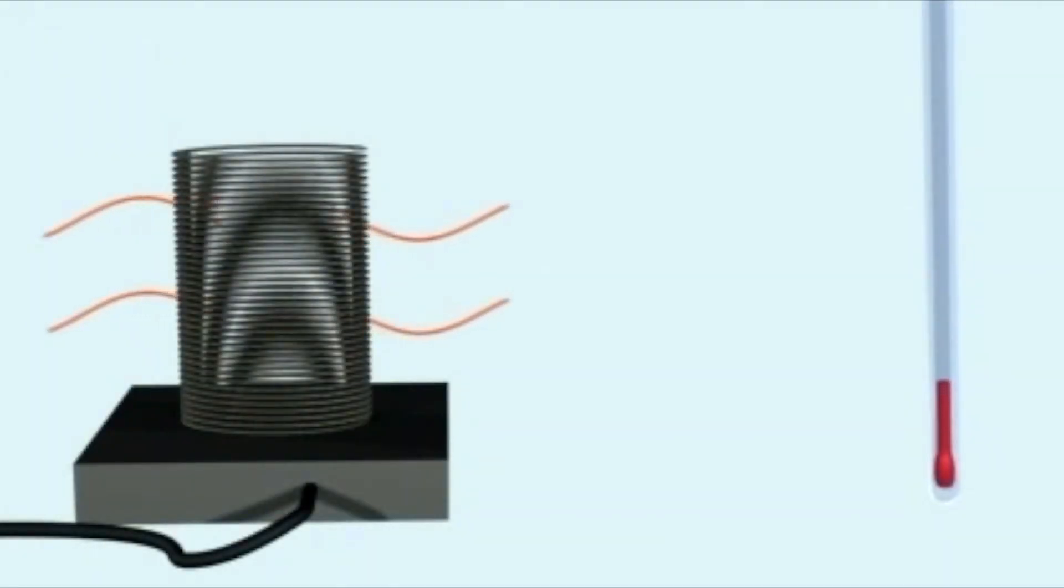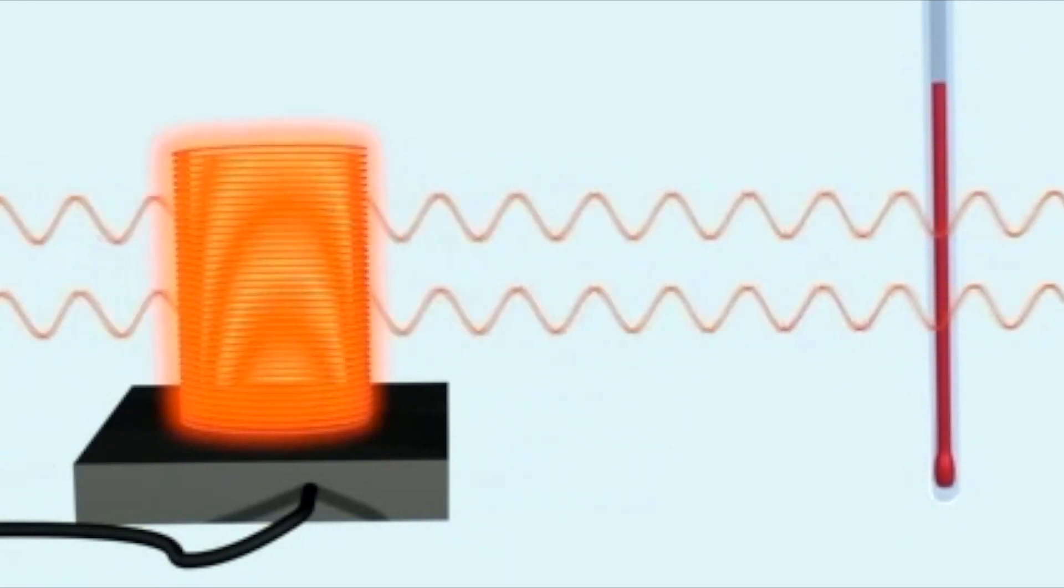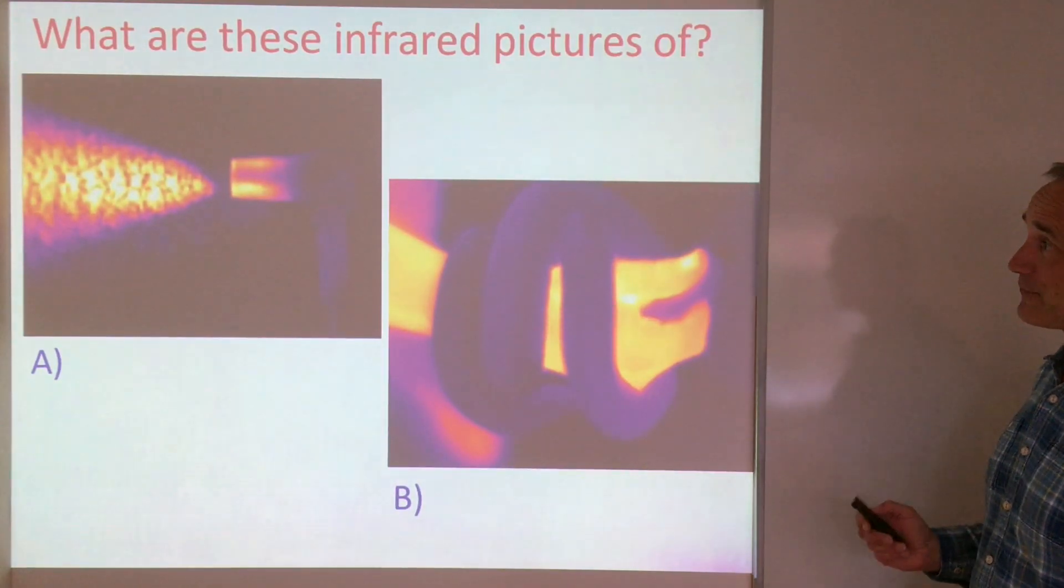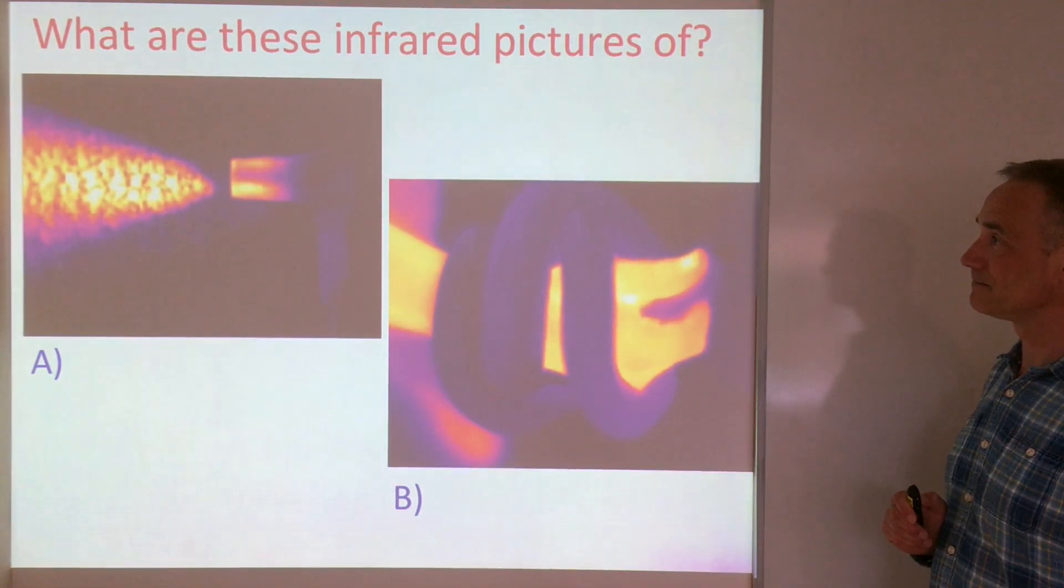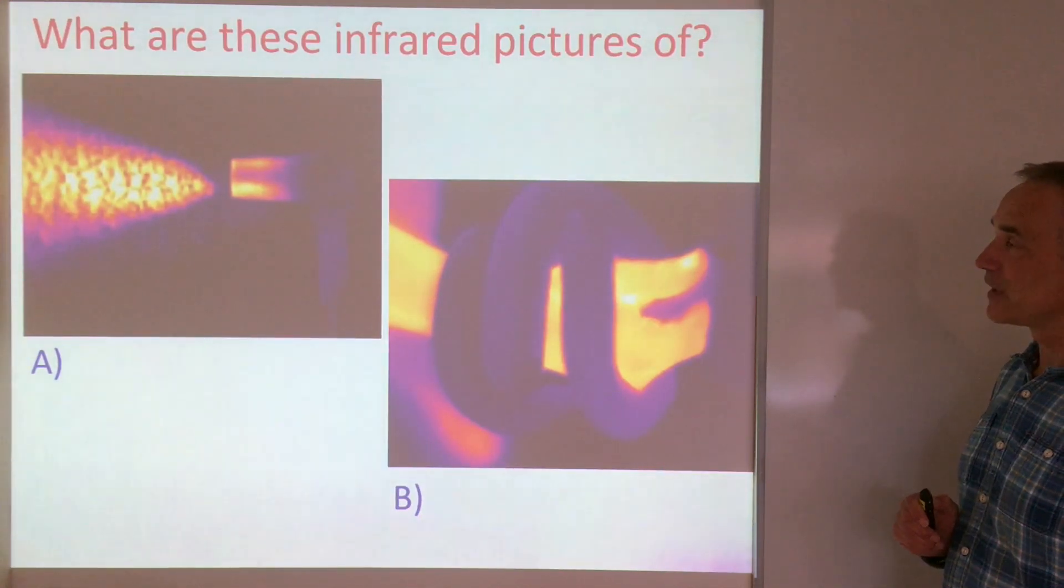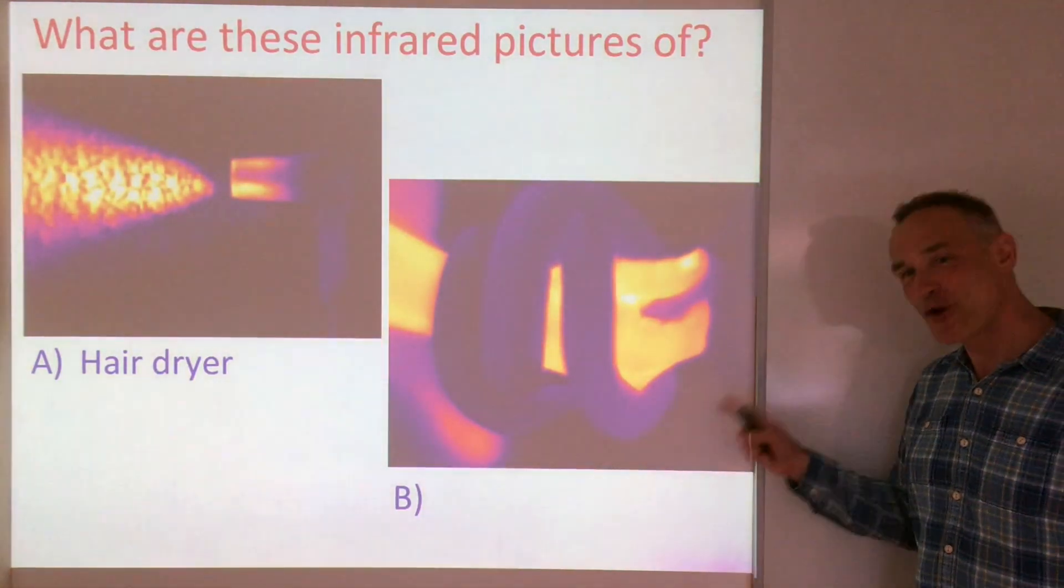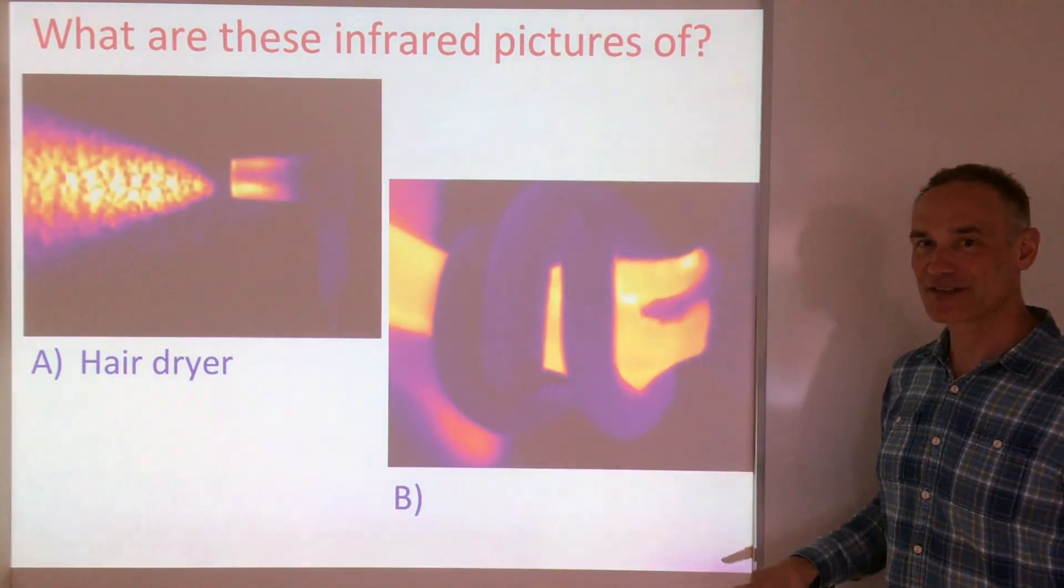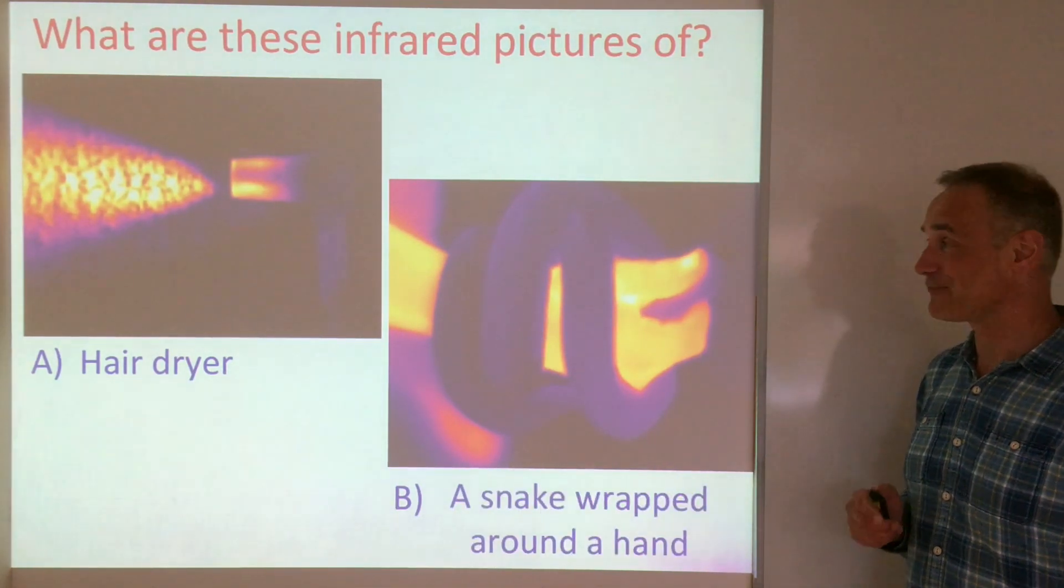All objects emit some infrared radiation. However, as an object gets hotter it emits more infrared radiation of a higher frequency and so carries a greater amount of energy. Have a look at these two images taken by an infrared camera and see if you can work out what they are. The first one, if you got it, was a hairdryer. The next one, not many people get. I'll give you another clue. No heat is being given by this circular thing wrapped around the hand. It's cold blooded. It is a snake wrapped around somebody's wrist.